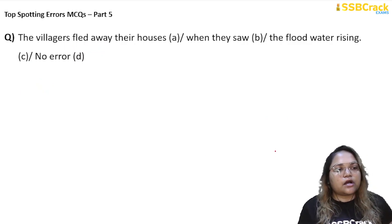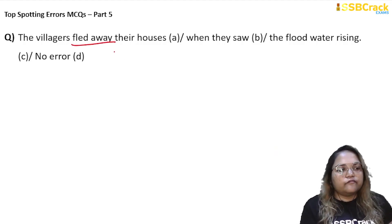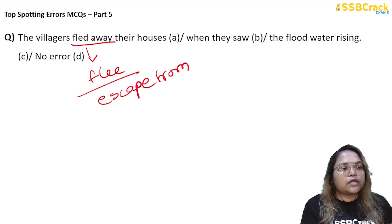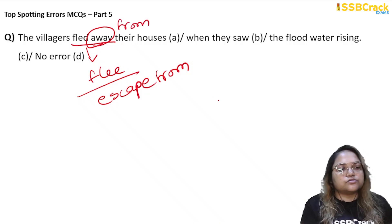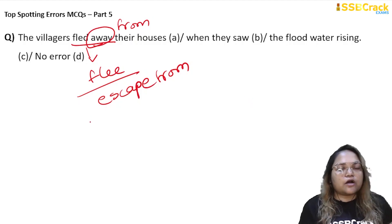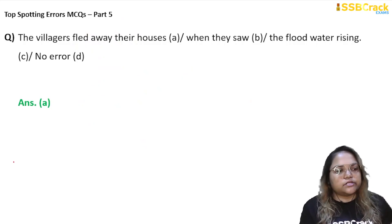Next question: 'The villagers fled away their houses when they saw the flood water rising.' Again the sentence may seem correct, but there is an error in part A — the use of 'fled away.' 'Fled' is the V2 form of 'flee,' which already means to escape from something. You cannot use 'away' after 'fled.' You either say 'the villagers fled from their houses' or simply 'fled their houses.' So 'away' should not follow 'flee' or 'fled.' The error was in part A, so A is our answer.